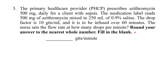This question is designed to be confusing. It gives a prescribed dose, dose on hand, and volume — which might make you think to use the dose ordered divided by dose in hand formula. But it also gives drop factor and time. You might be confused whether to use: dose ordered ÷ dose in hand × quantity, or volume ÷ time × drop factor.